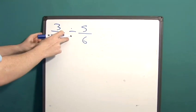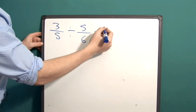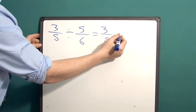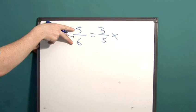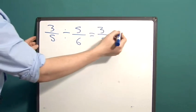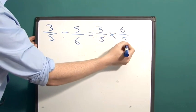What we can do here then is say that this is the same thing as 3 fifths multiplied by the inverse of this number here. The inverse of a fraction is where we just flip it upside down.